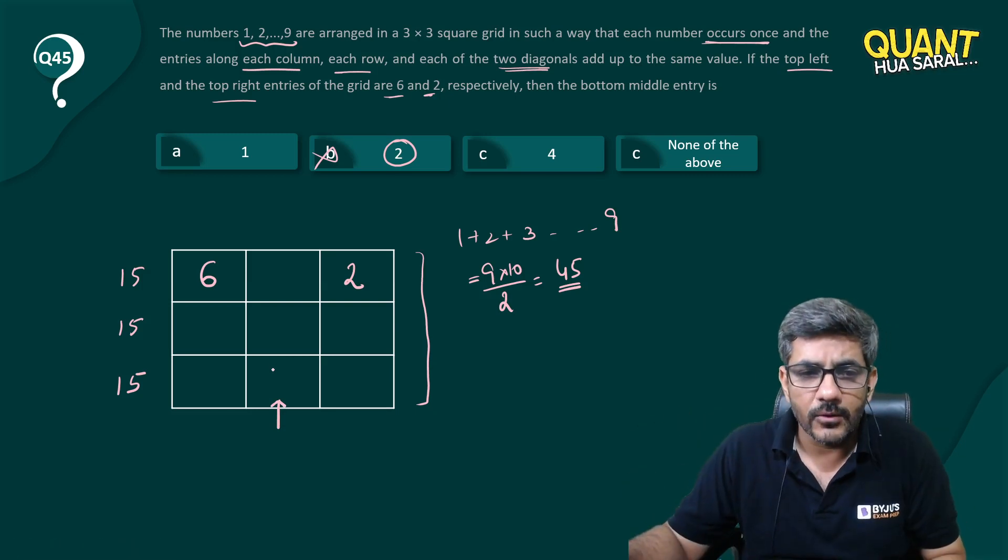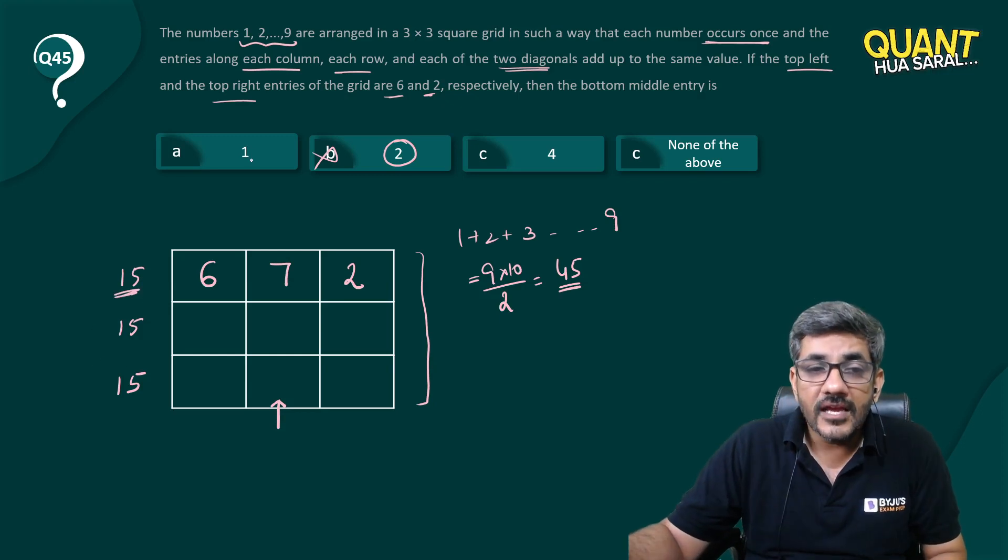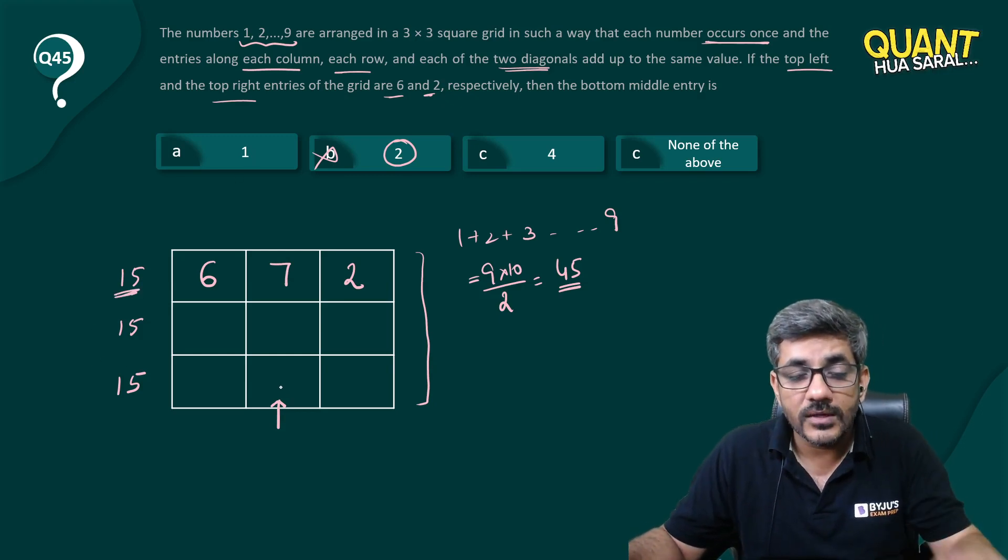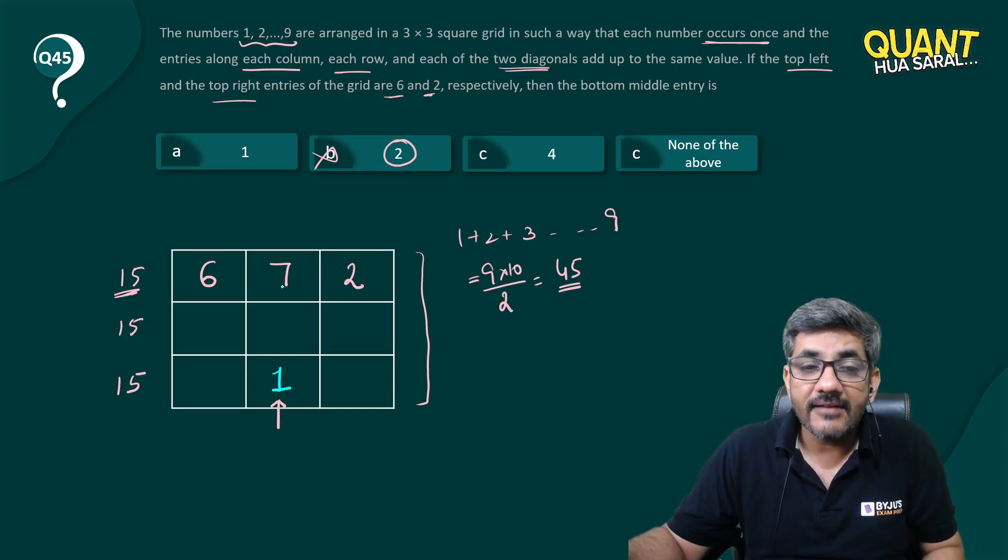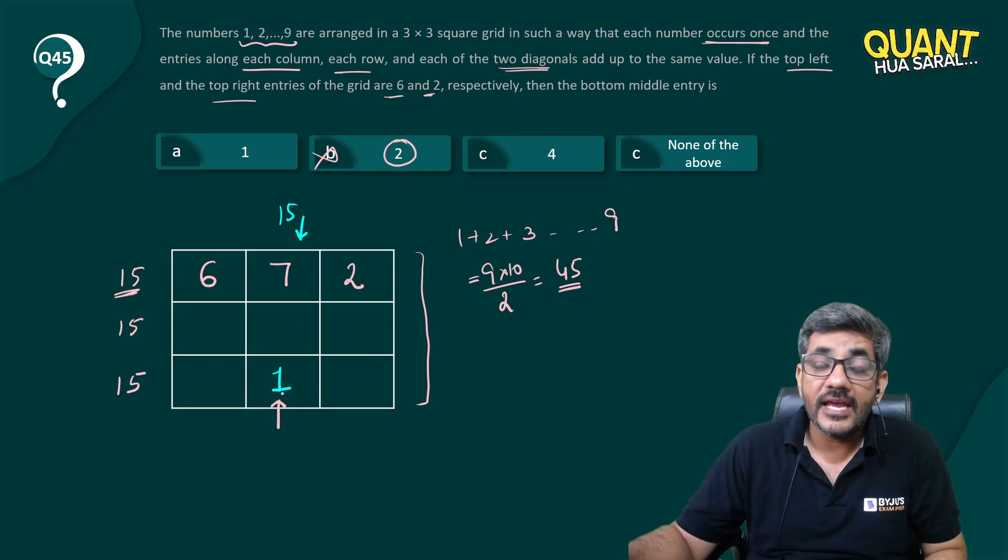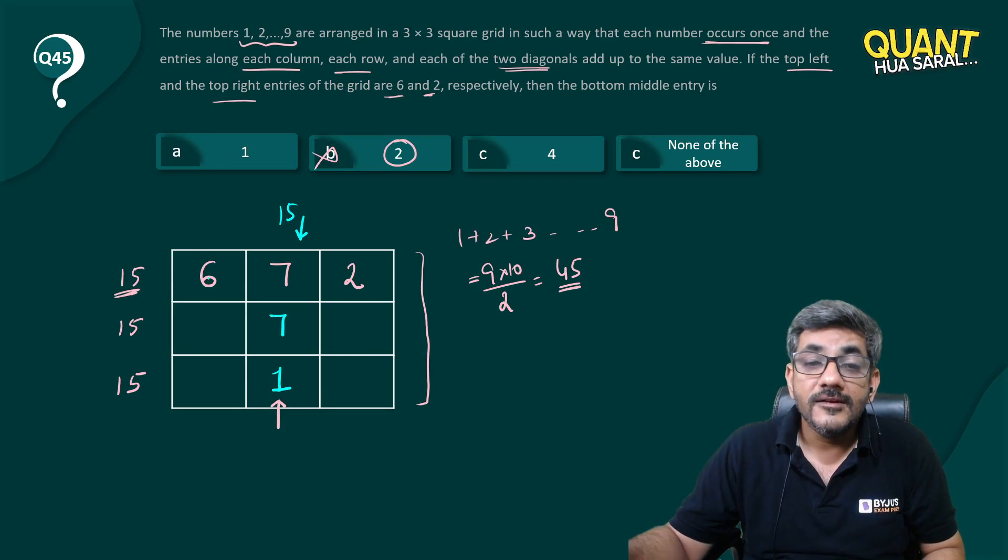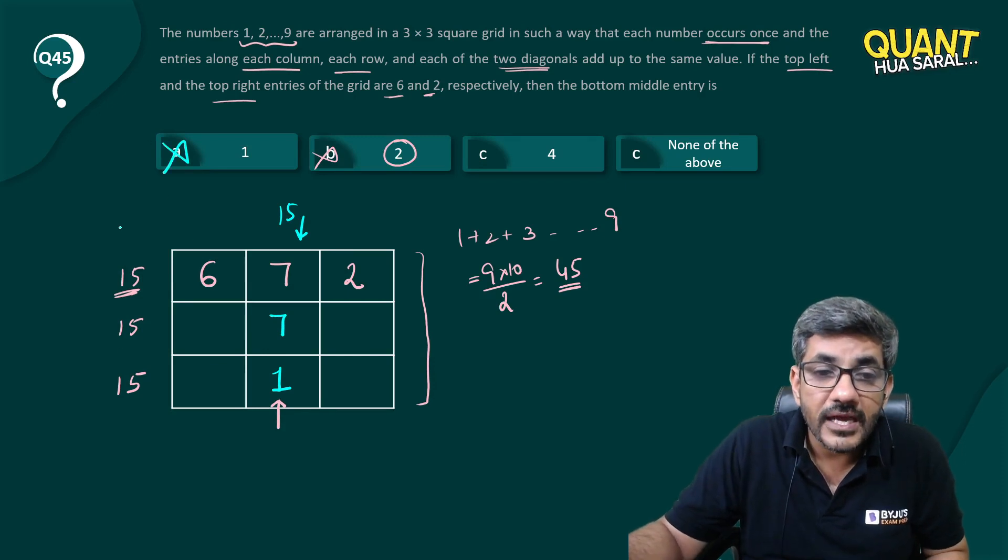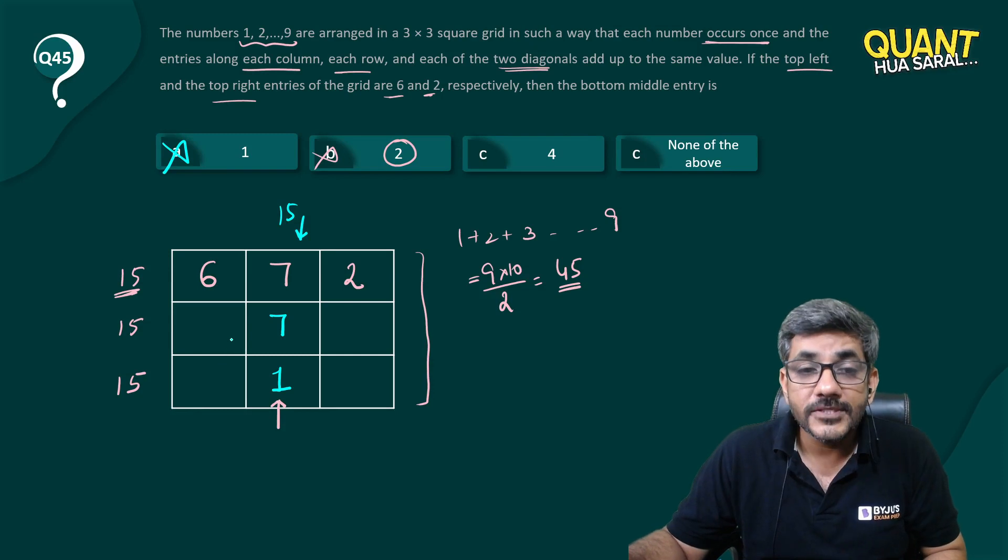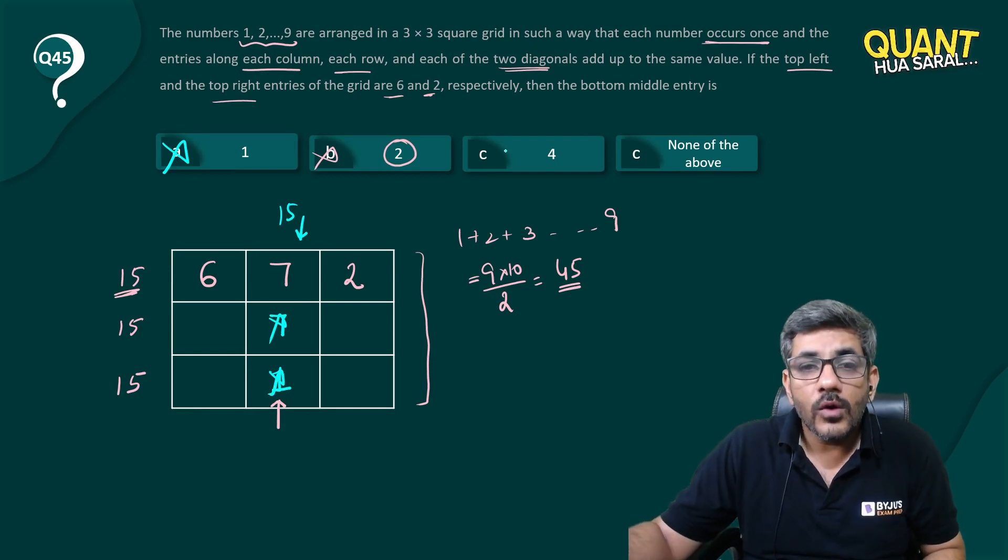First of all if this is 6 this is 2. 6 plus 2 is 8. After 8 I have 7 over here to make it 15. If I use option a that is equal to 1. So if I write 1 here 7 plus 1 is 8 and this should also add up to 15. So 7 plus 1 is 8. 8 plus what is 15? That is 7. But how can I write 7 again? So by that logic option a is gone. Let us just eliminate that. Let us just remove it.